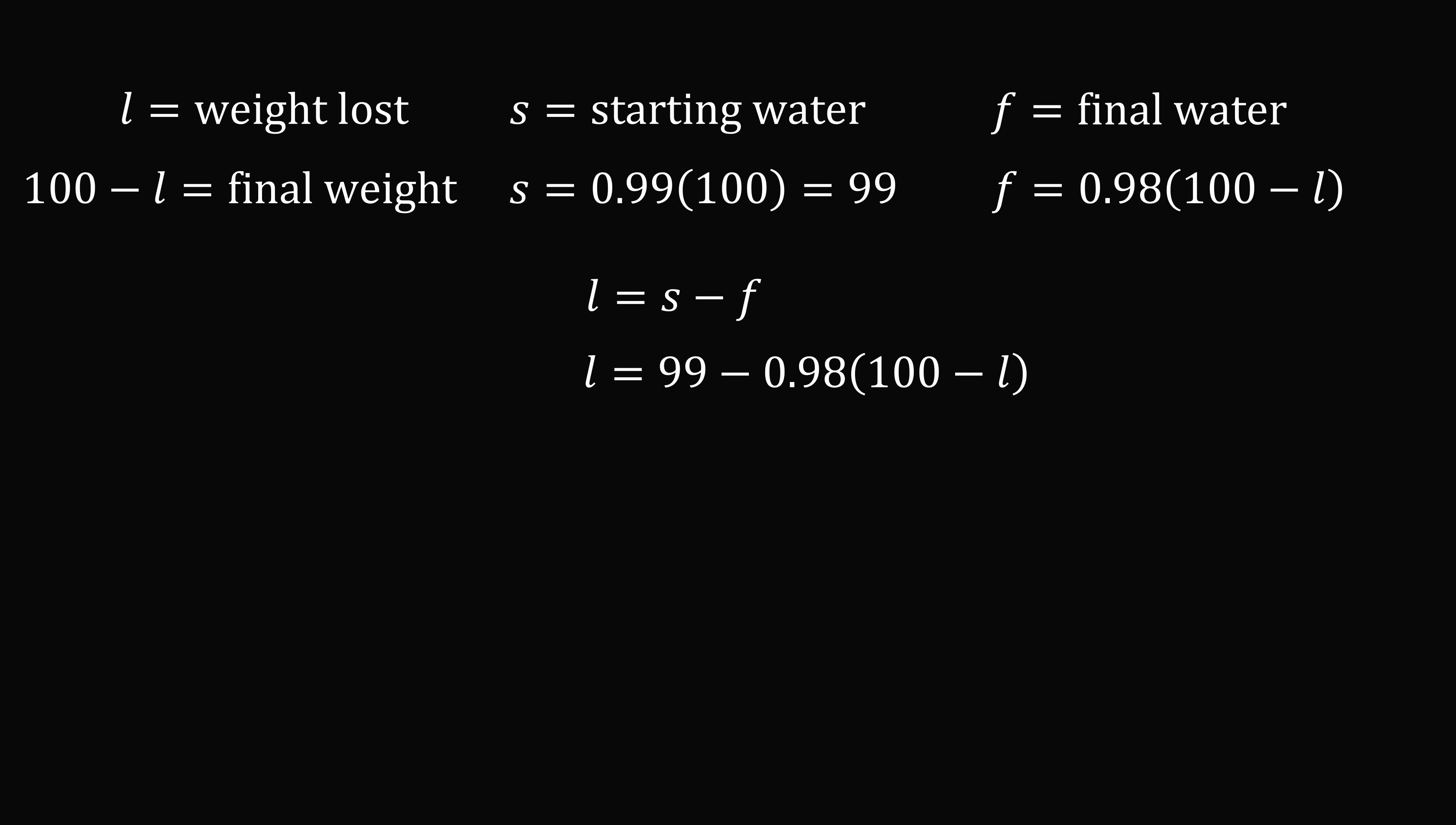But here's another algebraic way to solve it. Let's consider the weight that is lost, say that's the variable l. We know the final weight will be 100, which is the original weight, minus l. Then we have s as the starting water weight, which we know is equal to 99% of 100, which equals 99 kilograms. What is the final water weight f? This will be equal to 0.98, 98% of the final weight, and the final weight is 100 minus l. So the weight loss will be equal to the starting water minus the final water.